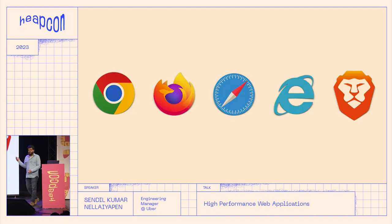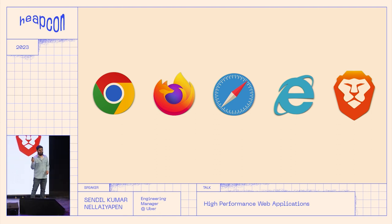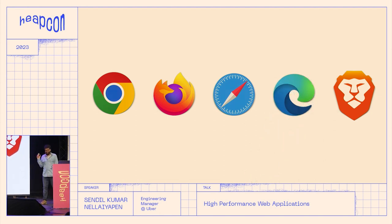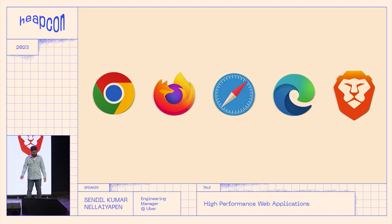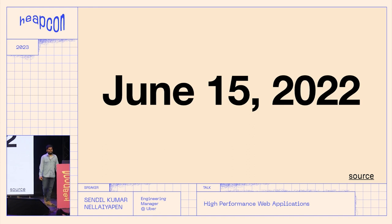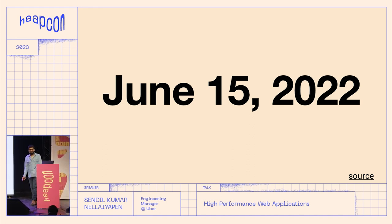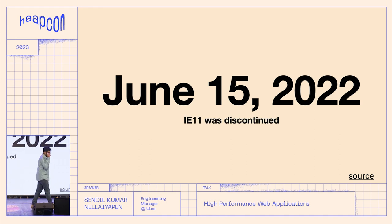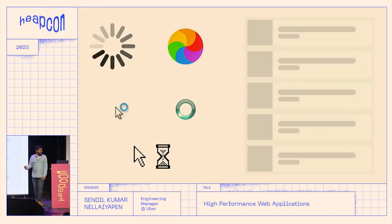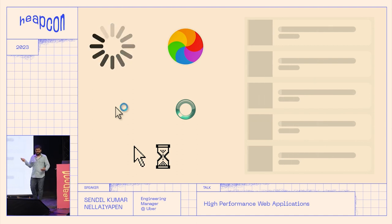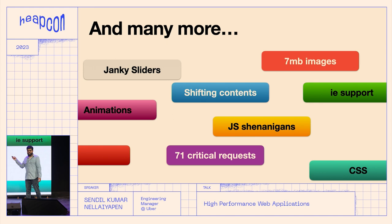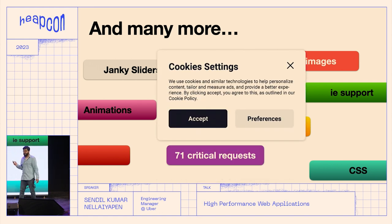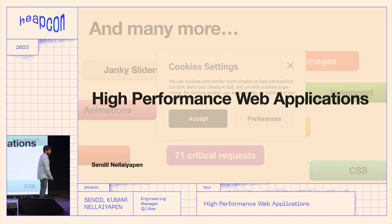Anybody used any of this? Can you spot the odd one out here? That's correct — we have new things we need to cater for. And does anybody know the significance of this date? As a web developer you should know. Yes — that's the day Internet Explorer died. And I hate seeing that screen. Putting all this together — janky sliders, low performance — this is what motivated me to do this talk on high performance web applications.